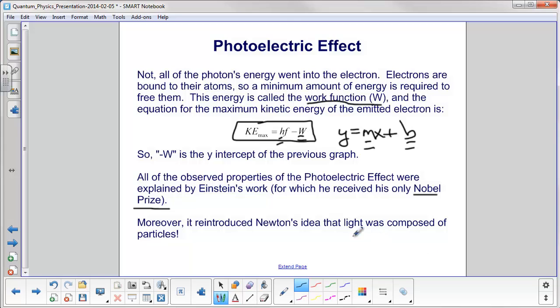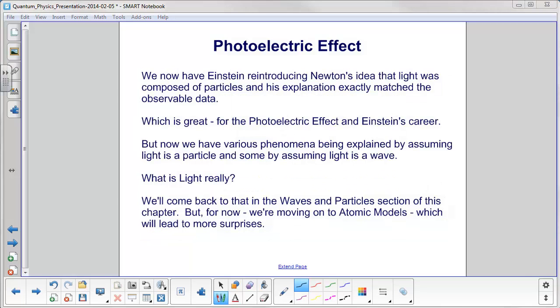Moreover, it reintroduced Newton's idea that light was composed of particles. We now have Einstein reintroducing Newton's idea that light was composed of particles and his explanation exactly matched the observable data, which is critical.